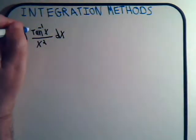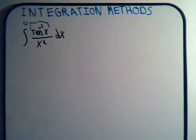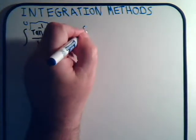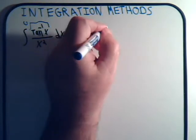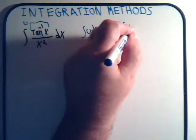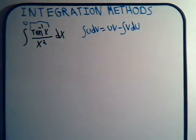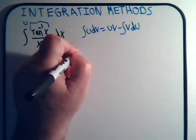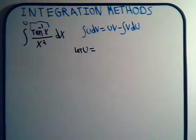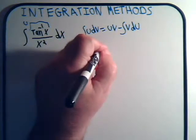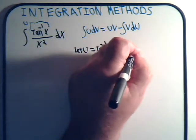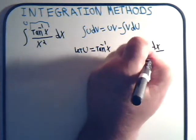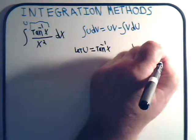And if we call this part u, we can know how to differentiate that to get du. And this would have to be dv then. The formula goes integral of u dv equals uv minus the integral of v du. So let's try it. So I want u equal the inverse tangent of x. And du will equal dx divided by 1 plus x squared.